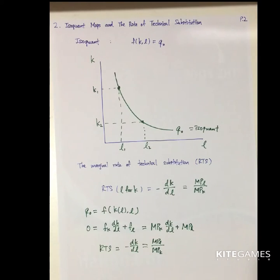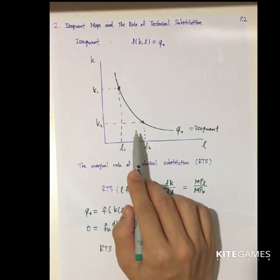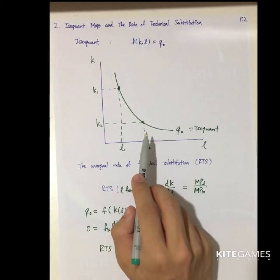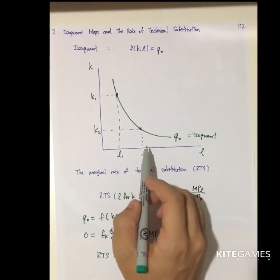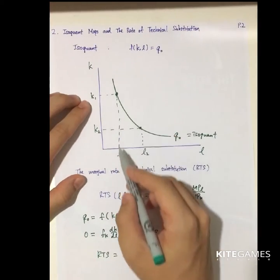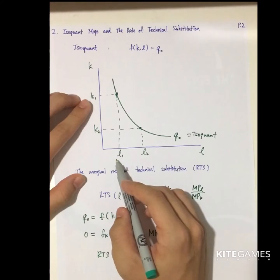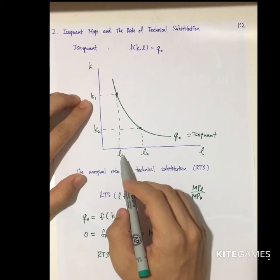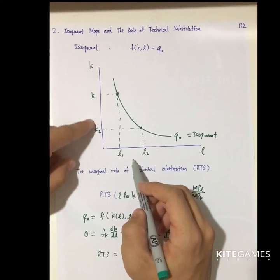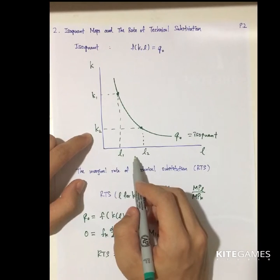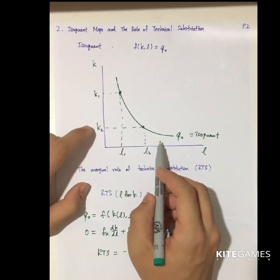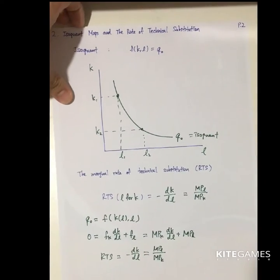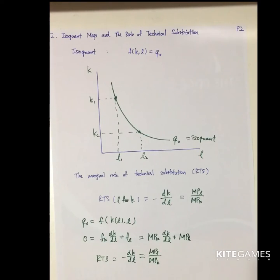Next we discuss the properties of the RTS. Similar to the diminishing marginal rate of substitution in indifference curves, in production functions you have the diminishing marginal rate of technical substitution. It means that if the capital-to-labor ratio is high and you add some labor, you can give up lots of capital to sustain the output. But if you have very little capital and you add more labor, you can only give up a small amount of capital. This is the intuition of the diminishing marginal rate of technical substitution.